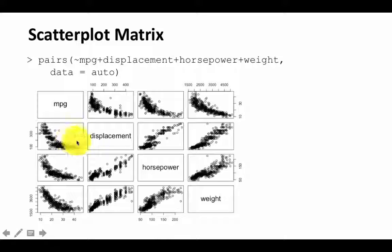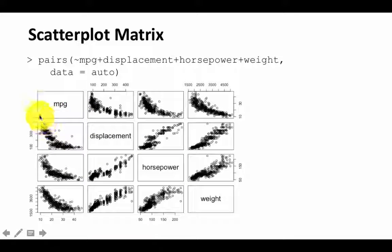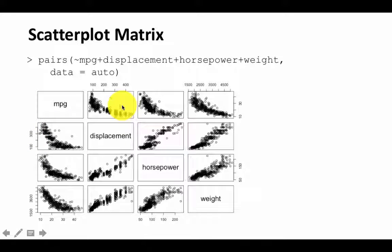Here is our scatter plot of displacement over MPG. How do you interpret each scatter plot — meaning which variable is on the x-axis and which is on the y-axis? For this particular scatter plot, displacement is on the y-axis and MPG is on the x-axis. So this is a plot of MPG on the x-axis and displacement on the y-axis. On the other hand, this plot is a plot of displacement on the x-axis and MPG on the y-axis — and this is in fact the plot we saw earlier.